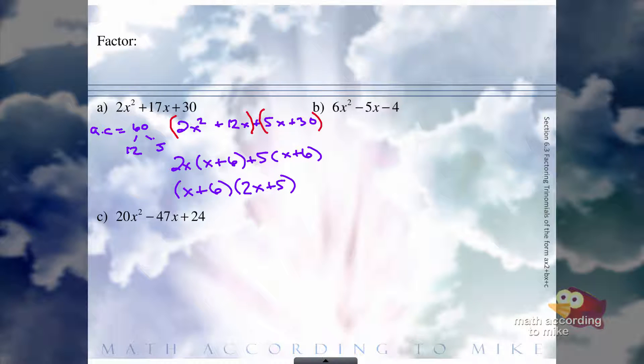So that is the factorization of 2x squared plus 17x plus 30. Let's try another one.